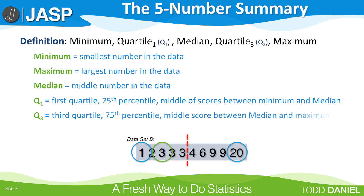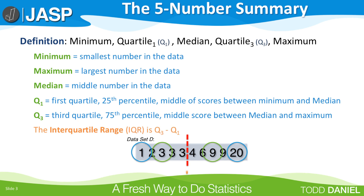Quartile three is the third quartile, also called the 75th percentile. It's the middle score between the median and the maximum. The interquartile range is the difference between quartile three minus quartile one, or the range in the middle half of the data. The interquartile range is more stable because it cannot be affected by outliers.